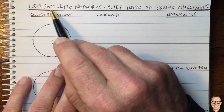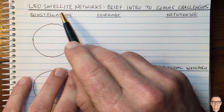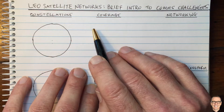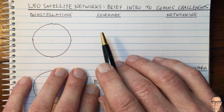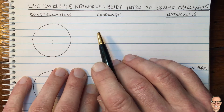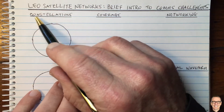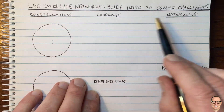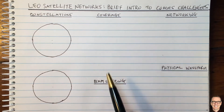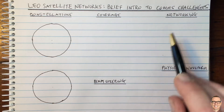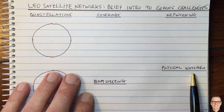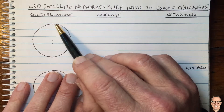Low-Earth orbit satellites are revolutionising satellite communications. Let's take a brief look at the communication challenges in designing LEO satellite networks. We're going to look at five topics: constellations, coverage, beam steering, networking, and the physical waveform. Let's start with constellations.